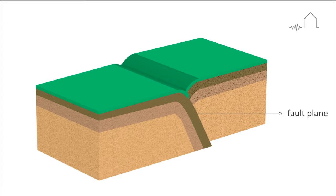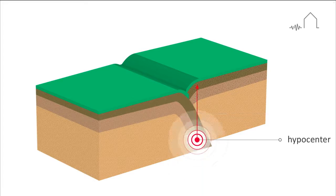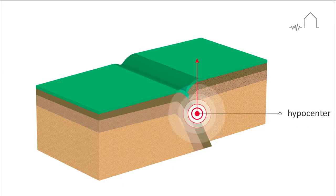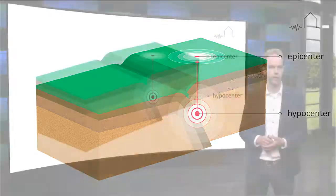The surface where they slip is called the fault plane, and the location below the earth's surface where the earthquake starts is called the hypocenter, and the location directly above it on the surface of the earth is called the epicenter.